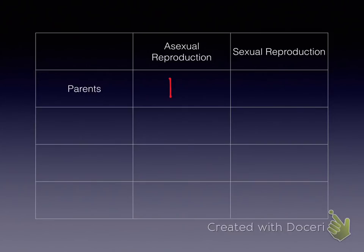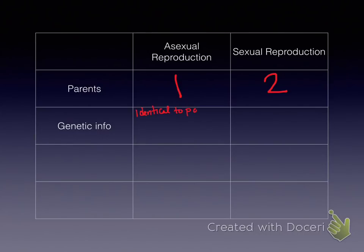For parents: asexual reproduction requires one parent and sexual reproduction requires two. Next, genetic info: in asexual reproduction, the offspring are going to be identical to parents and there's going to be no variation.